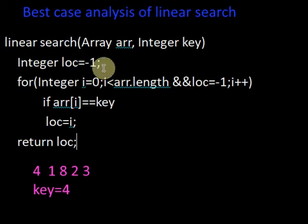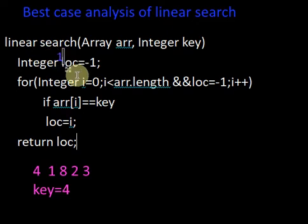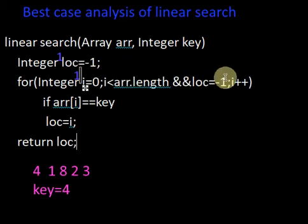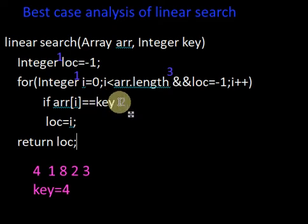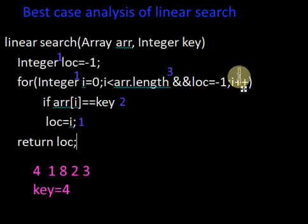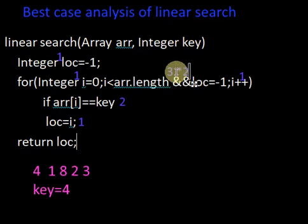Let's find out which operations are executed for linear search in the best case. The statement 'integer location equals minus one' is executed once. The initialization statement is also executed once. The condition check has three operations executed once. The comparison has two operations executed once. Location is updated — one operation. Then i is incremented — one operation. Once more the condition is checked, so the three operations will be executed a second time, then the condition is false and we exit the for loop.